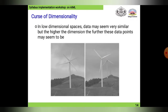Coming to the next topic: curse of dimensionality. The word itself suggests it is a curse. Consider three fans in a single row overlapping each other. When all three fans rotate, you will see only one fan column with multiple fan fins. There are physically three fans, but as per dimensions only one column is visible — this is the curse of dimensionality.